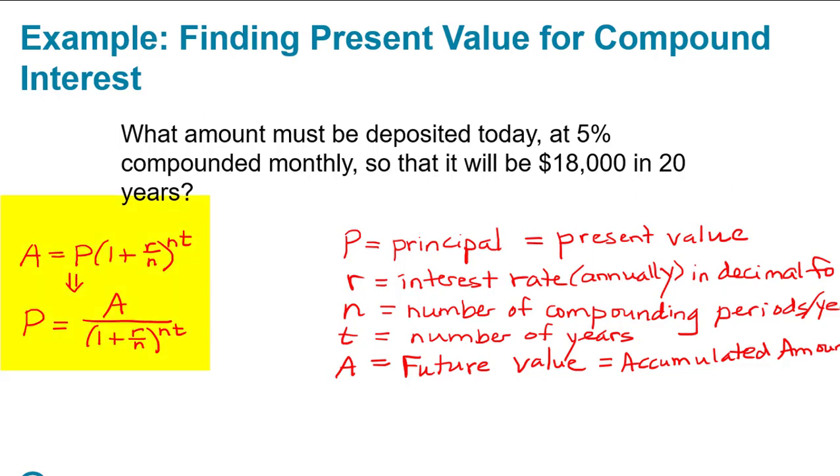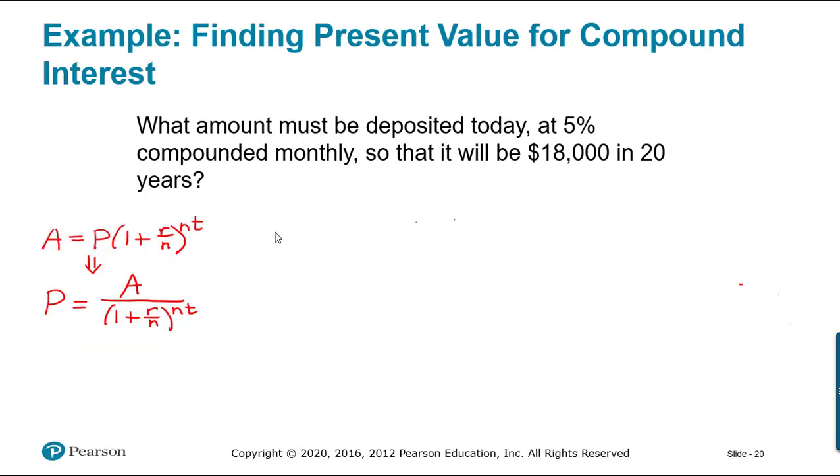To make it easier to find P, the unknown value, we're going to rearrange the compound interest formula. Instead of saying A equals P times (1 plus r over n) to the nt, we're going to divide both sides by the quantity being multiplied by P and get P equals A over that quantity.